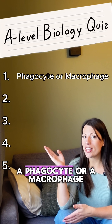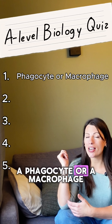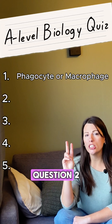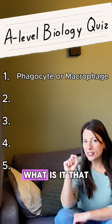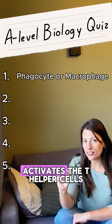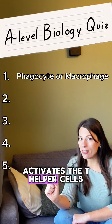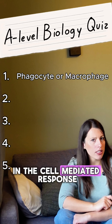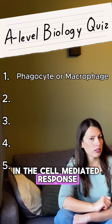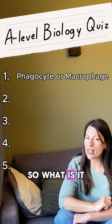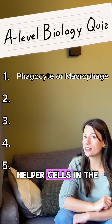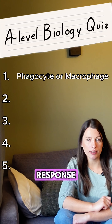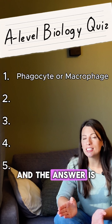Question one: name the type of cell that carries out phagocytosis. The answer is a phagocyte or a macrophage. Question two: what is it that activates the T helper cells in the cell mediated response?